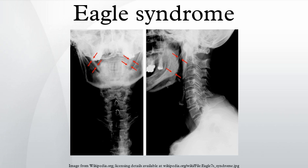Usually the condition is present on only one side; however, rarely it may be present on both sides. Two forms of Eagle syndrome exist: the classic form and the vascular one.